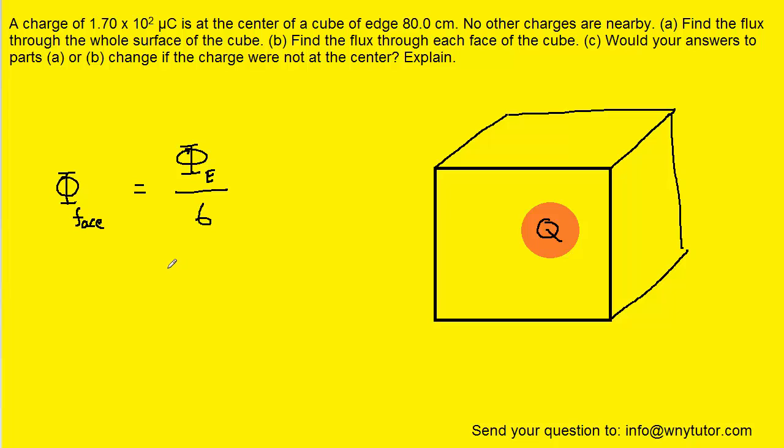Now for part B it turns out there's a little bit of a trick here. It's asking us to calculate the flux through each face of the cube. We have to keep in mind that this charge is located, according to the question, exactly in the center of the cube.